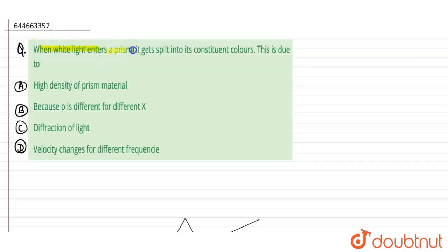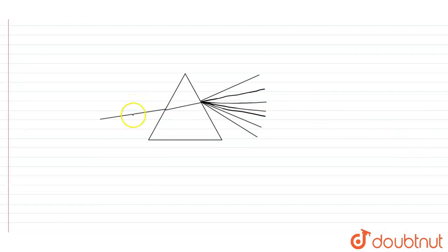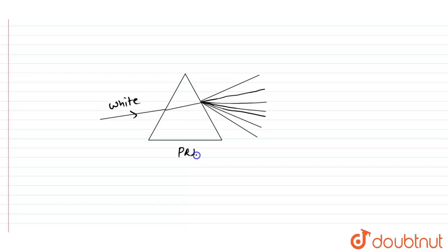The question is: when white light enters the prism, it gets split into its constituent colors. What is this due to? So basically, let's understand the concept of the prism. When the white light enters the prism — as you can see in the diagram here — this is the prism, and this is the angle of prism.